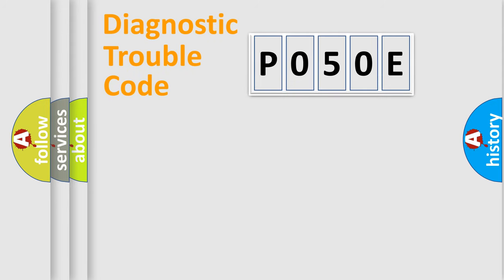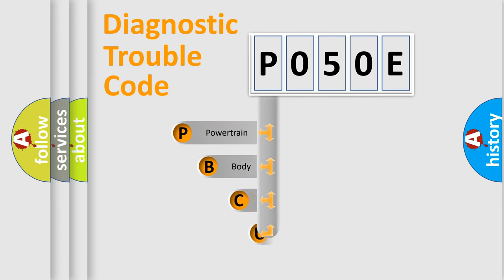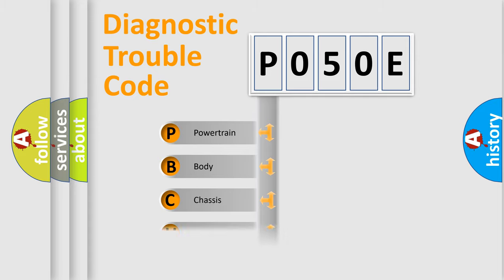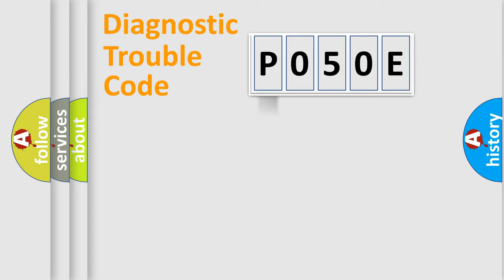Let's do this. First, let's look at the history of diagnostic fault code composition according to the OBD2 protocol, which is unified for all automakers since 2000. We divide the electric system of an automobile into four basic units: Powertrain, Body, Chassis, and Network.